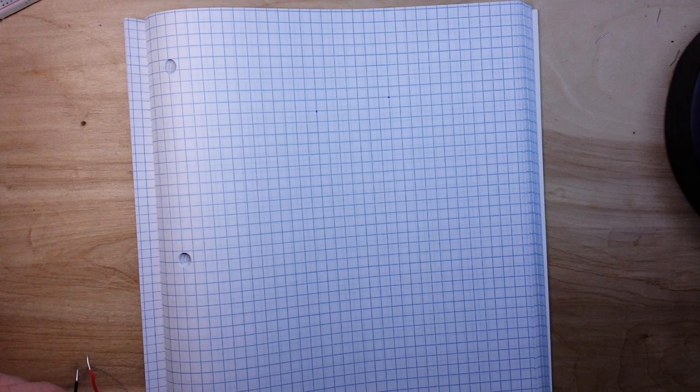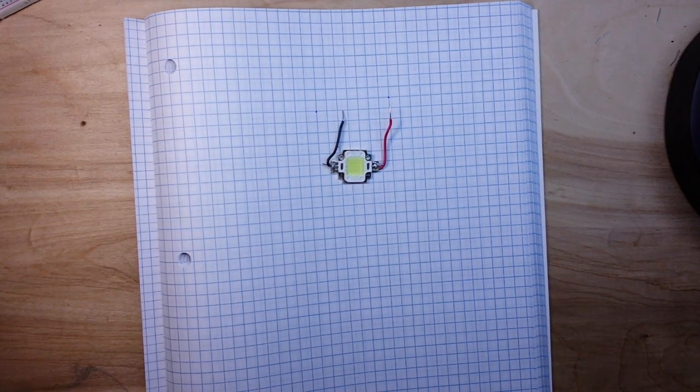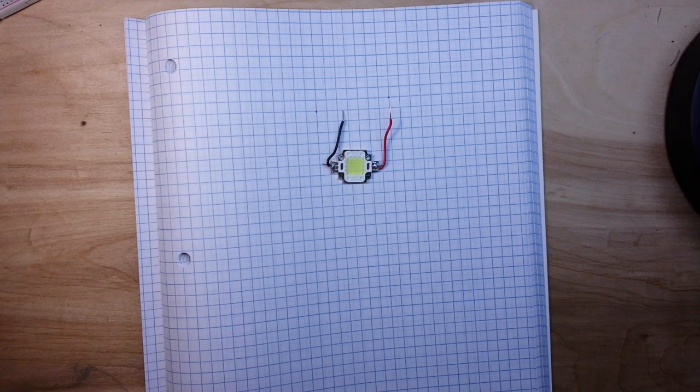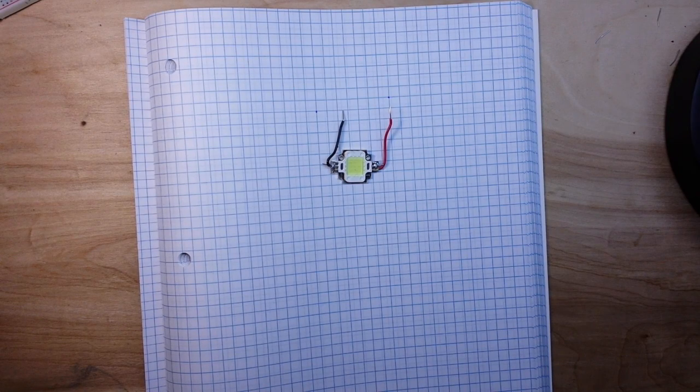Hey what's happening guys, today we are going to build a voltage regulated and current regulated driver for one of these high-powered LEDs. This happens to be a 10 watt LED, so we're going to use a couple of LM317s, some resistors.